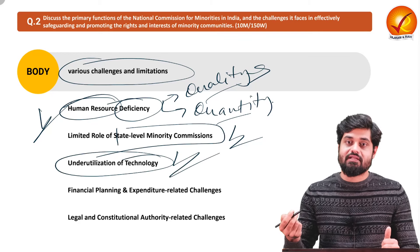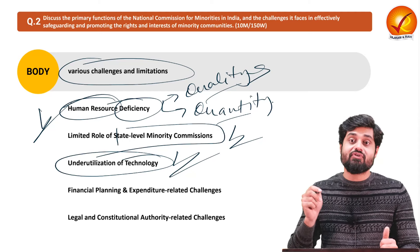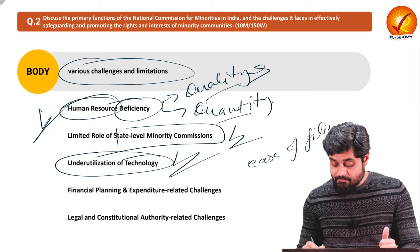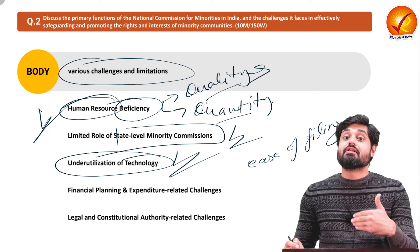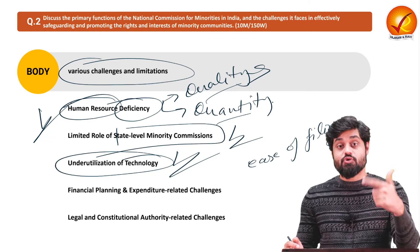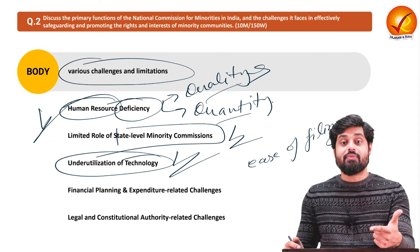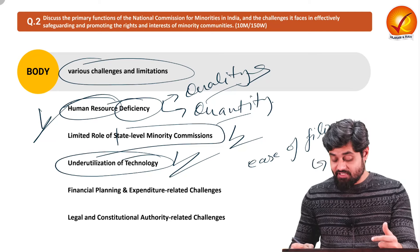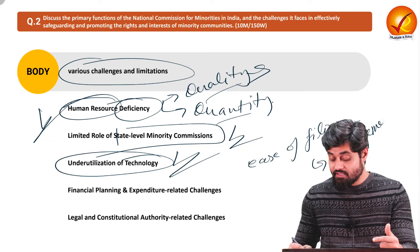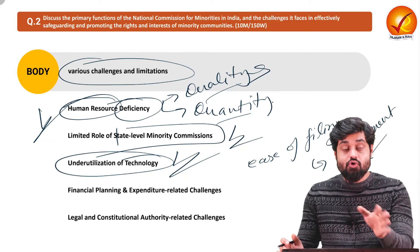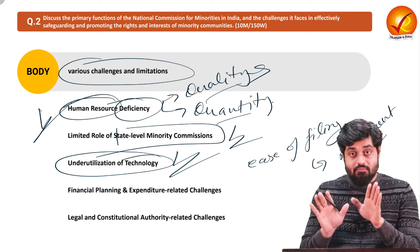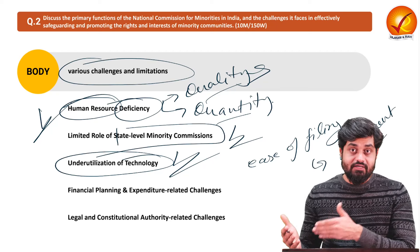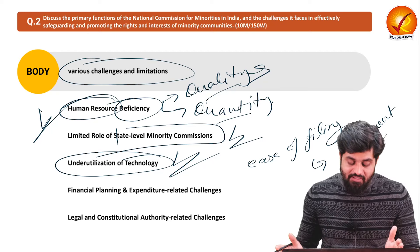Under-utilization of technology is also a challenge. First, ease of filing complaints must be ensured — digitally, a person should be able to report to the commission, file a complaint, and provide evidence online, with a proper system for management of that data. Better utilization of modern technology can speed up the process of conflict resolution and complaint resolution in the national minority commission.